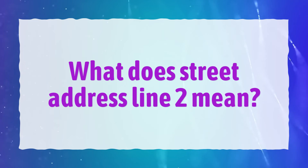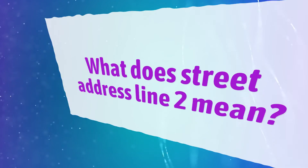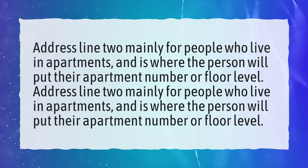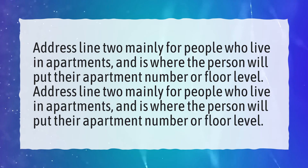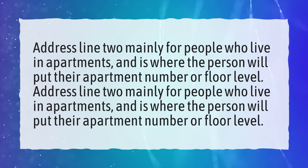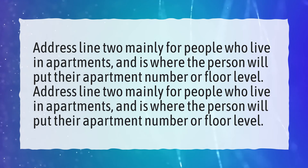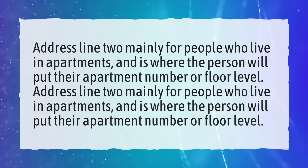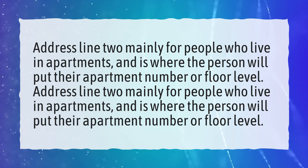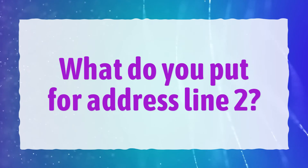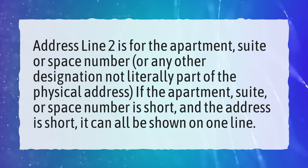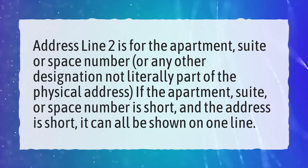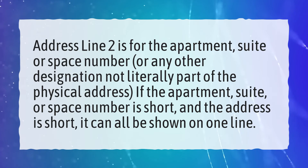What does Street Address Line 2 mean? Address Line 2 is mainly for people who live in apartments, and is where the person will put their apartment number or floor level. Address Line 2 is for the apartment, suite or space number, or any other designation not literally part of the physical address.